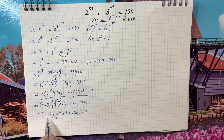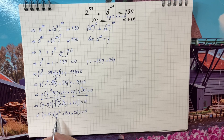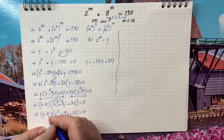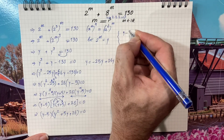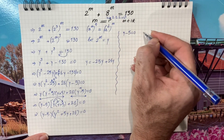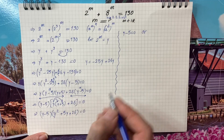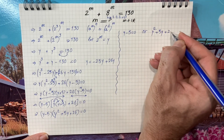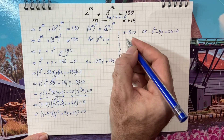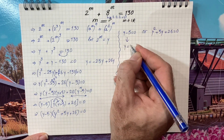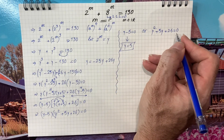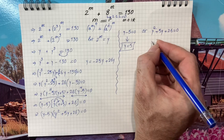We can see the common factor y minus 5 in both terms. Factoring it out gives y minus 5 times y squared plus 5y plus 26 equals 0. Since the product of two factors is zero, at least one of them must be zero. So either y minus 5 equals 0, giving y equals 5, or y squared plus 5y plus 26 equals 0.